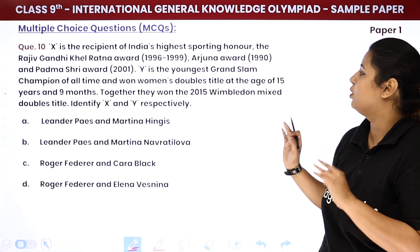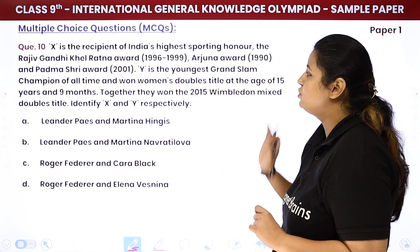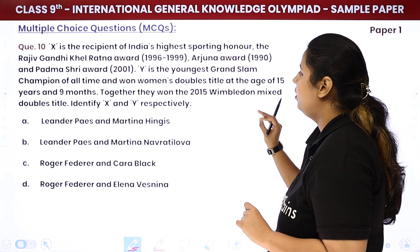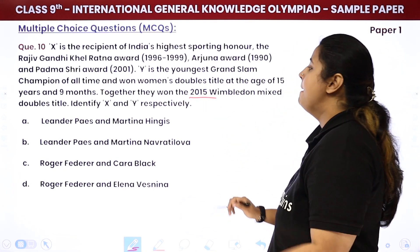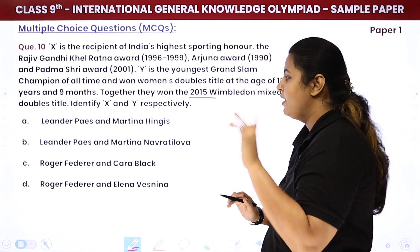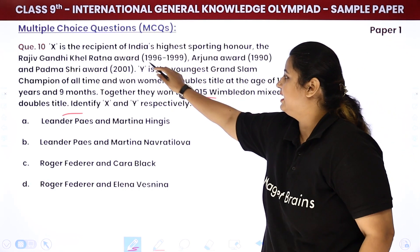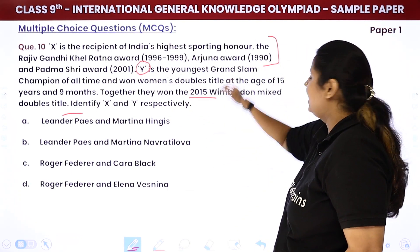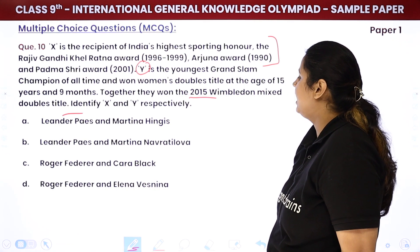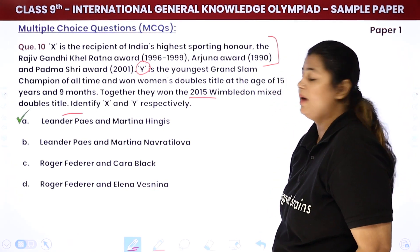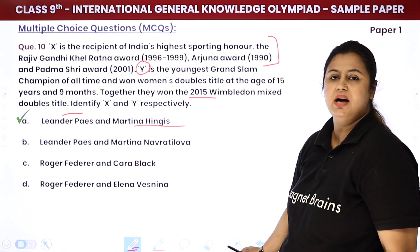X is the recipient of India's highest sporting honour — the Rajiv Gandhi Khel Ratna Award, whose name has now changed. He got the Arjun Award in 1990 and the Padma Shri. Y is the youngest Grand Slam champion of all time and won the women's doubles title at age 15 years and 9 months. Together they won the 2015 Wimbledon mixed doubles title. X is Leander Paes. For Y — the youngest Grand Slam champion record for women's doubles at age 15 years and 9 months — the answer is Martina Hingis. So the answer is A: Leander Paes and Martina Hingis.